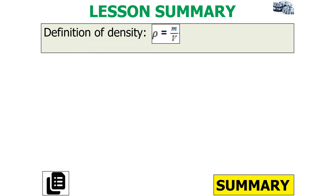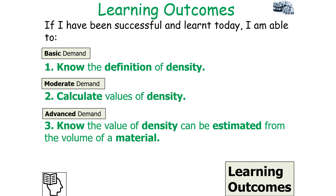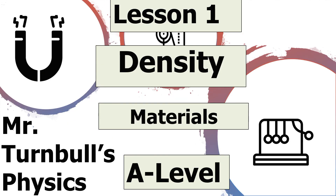If we've been successful in today's lesson, we should know the definition of density, be able to use the equation rho equals m over V, calculate values of density, and know how density can be estimated from the volume of a material. I hope you've enjoyed today's lesson on density, which is part of the materials topic in AQA A-level physics. Thank you very much for listening, and as always, have a lovely day.